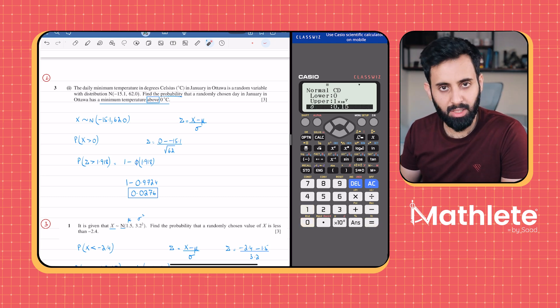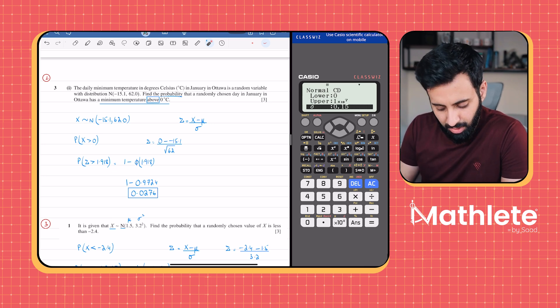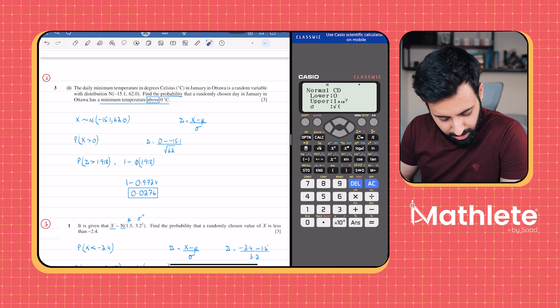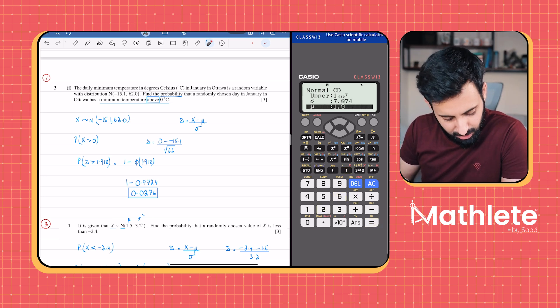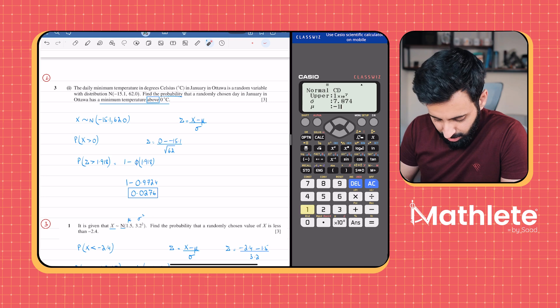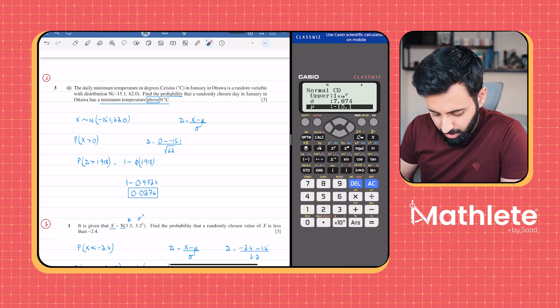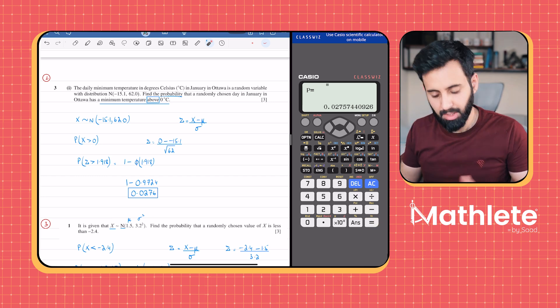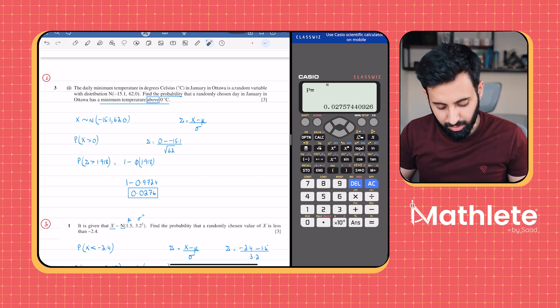As far as the standard deviation is concerned, which is sigma, that's square root of 72. As far as the mean is concerned, which is mu, that's minus 15.1. There you go, press equals one more time and that's it. Your calculator has done all the hard work which you still have to do.